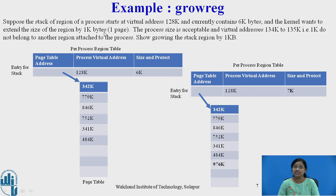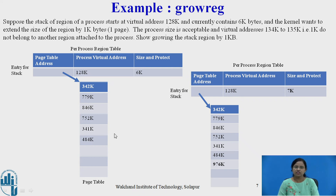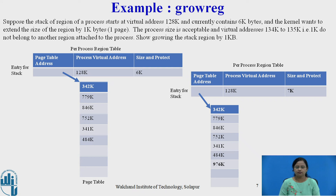Why is this legal? The total size of the page table is 9, so it is possible to expand, and the new page is added into the page table. The starting address is 128K, then 129, 130, 131, 132, 133, and then 134 to 135 is the expanded range. This is how the grow region algorithm increases the size of the process whenever there is a dynamic growth of the stack, and how the kernel can increment or decrement the size of processes.